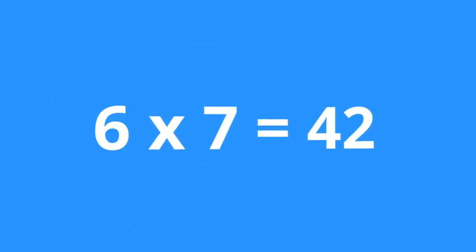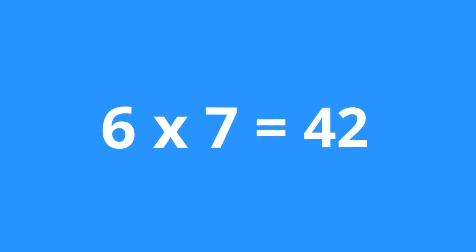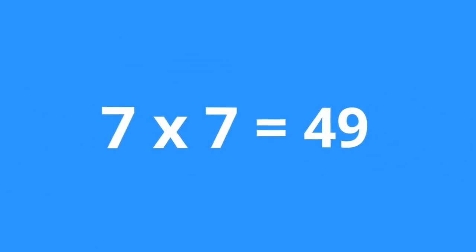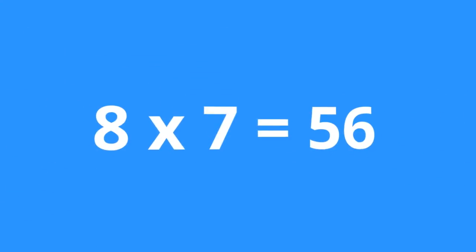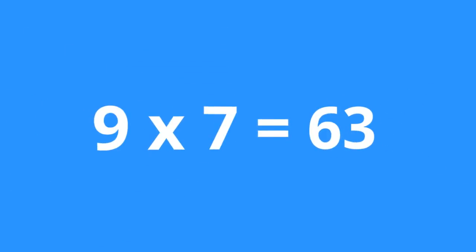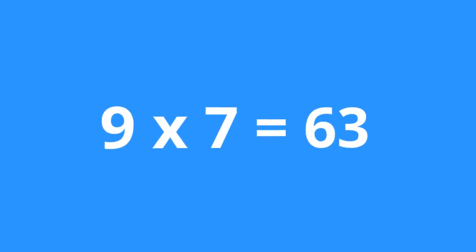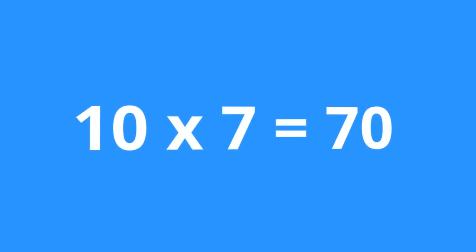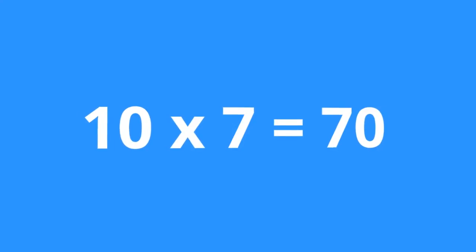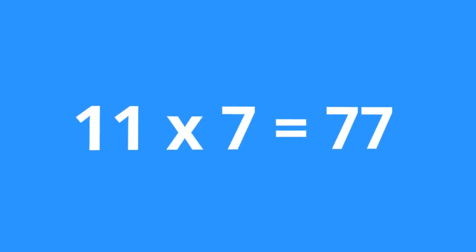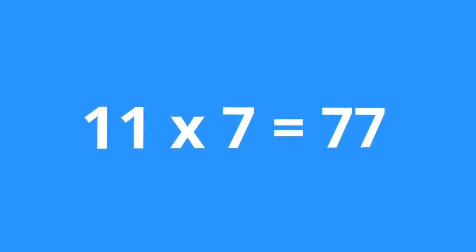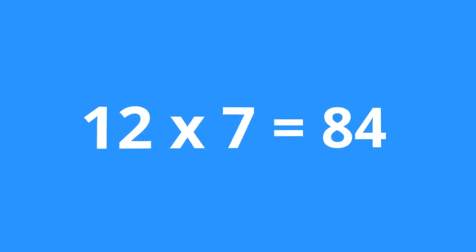6 times 7 is 42. 7 times 7 is 49. 8 times 7 is 56. 9 times 7 is 63. 10 times 7 is 70. 11 times 7 is 77. 12 times 7 is 84.